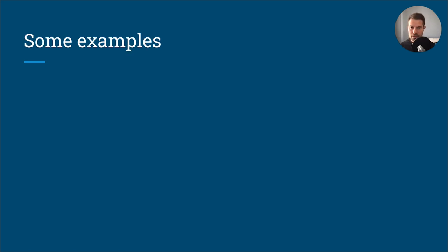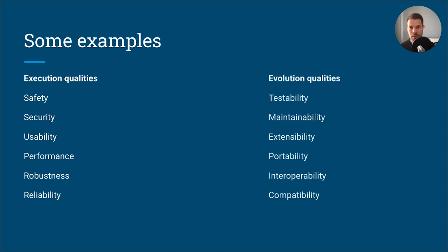Let's see some examples of non-functional requirements. They can be broken down into two groups. Execution qualities, which are observed during the runtime of your product, like safety, usability and performance. And evolution qualities, which are embedded in the architecture or the build of your product, like testability, portability or extensibility. There are more than 60 other examples that you can find out there. Some of them would be relevant to your product, some would not. Some would be more relevant than the others. So we need to find the right balance between all of them.